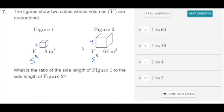4 times 4 is 16, and 16 times 4 is 64. So the side length in Figure 1 is 2 and the side length in Figure 2 is 4. So their ratio will be 2 to 4. And ratios, just like fractions, can be reduced. So I can reduce each of these by 2 to get 1 to 2. So the ratio of the side lengths is 1 to 2.